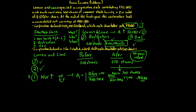I want to reference a previous problem — Gross Income Problem 3 — where Lemon and Lime organized a corporation, each contributing $50,000 and each receiving 500 shares of common stock with a par value of $100 per share. At the end of the first year, the corporation had accumulated net earnings of $100,000. We saw a cash dividend analyzed under the Glenshaw Glass three-part test: net worth, realization, and dominion and control — all three elements were met.